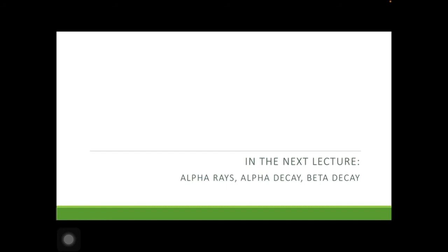In the next lecture, we will begin the actual syllabus starting with alpha rays, alpha decay, range and energy of alpha particles, the tunneling effect of alpha decay, and the Geiger-Nuttall law relating range and energy. Then we will study beta decay and the continuous nature of the beta spectrum. Thank you very much.